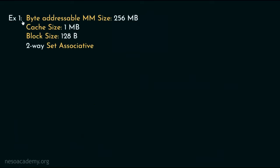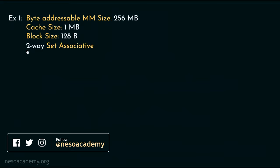Consider example number 1. Here a byte addressable main memory of size 256 megabytes is given, the cache size is 1 megabyte, the block is of 128 byte size, and the organization of the cache is two-way set associative. Suppose the usual questions are being asked — first about the physical address split, and thereafter we need to find out the tag directory size as well.